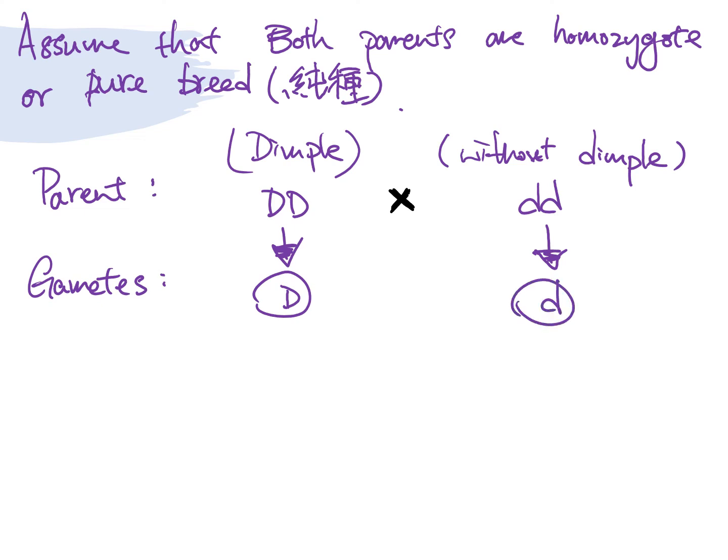And afterwards, it's going to do fertilization, and form the F1 generation, the first offspring, first generation. Here we go, you put them together, you have the big D and small d. What is the phenotype that is shown for the F1? It should be with dimples. This is how it works for the first genetic diagram.